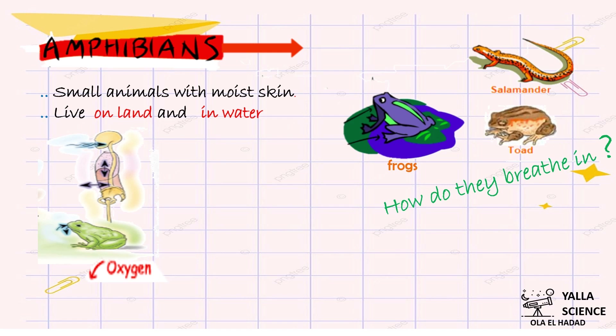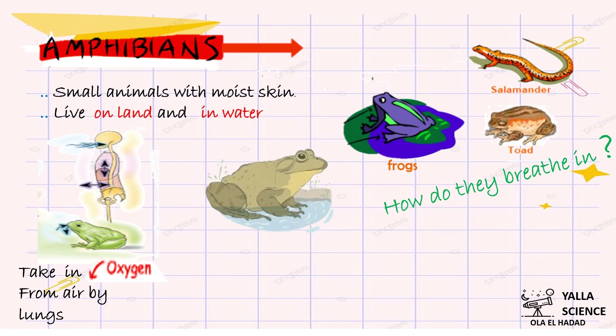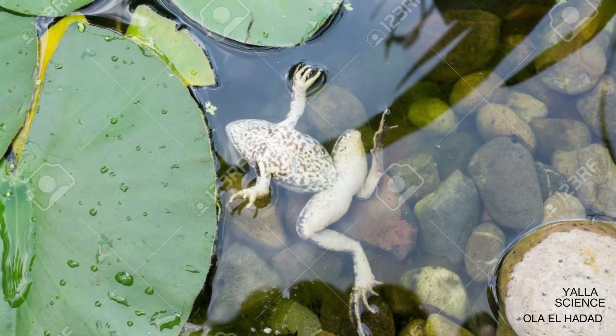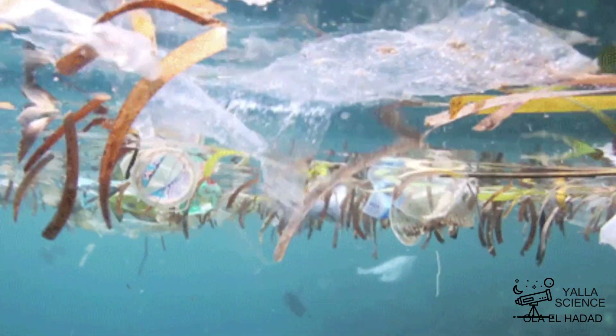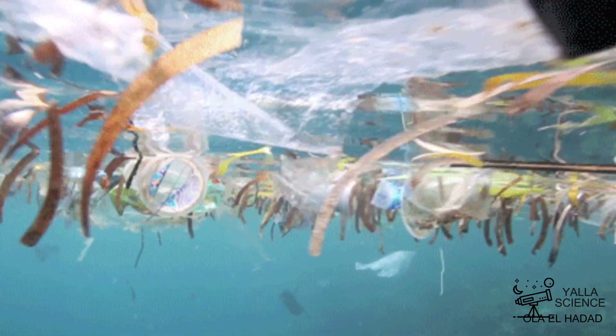When amphibians are in water, it is different. They take in oxygen from water through their skin, which allows water and gases to pass through, so they can absorb oxygen directly from water. Amphibians are very sensitive to the effects of water and air pollution and viruses that can travel through water.